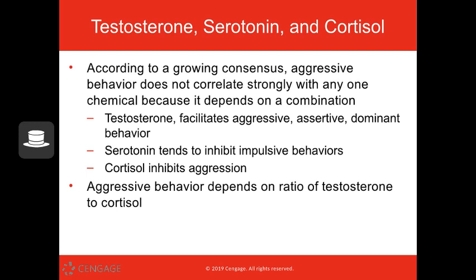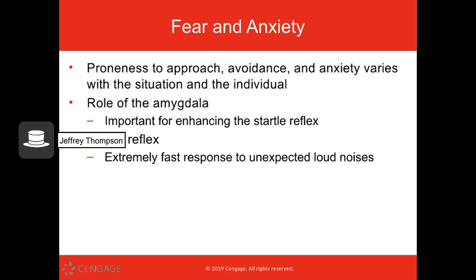Aggressive behavior is a complex mix of multiple things happening in our brains and our bodies. With aggressive behavior, we can look at testosterone, which facilitates aggressive, assertive, dominant behavior — those stereotypically masculine traits. Then we have serotonin, which helps inhibit impulsive behaviors, and cortisol, which inhibits aggression. When looking at aggressive behavior, we have to look at the ratio of testosterone to cortisol.